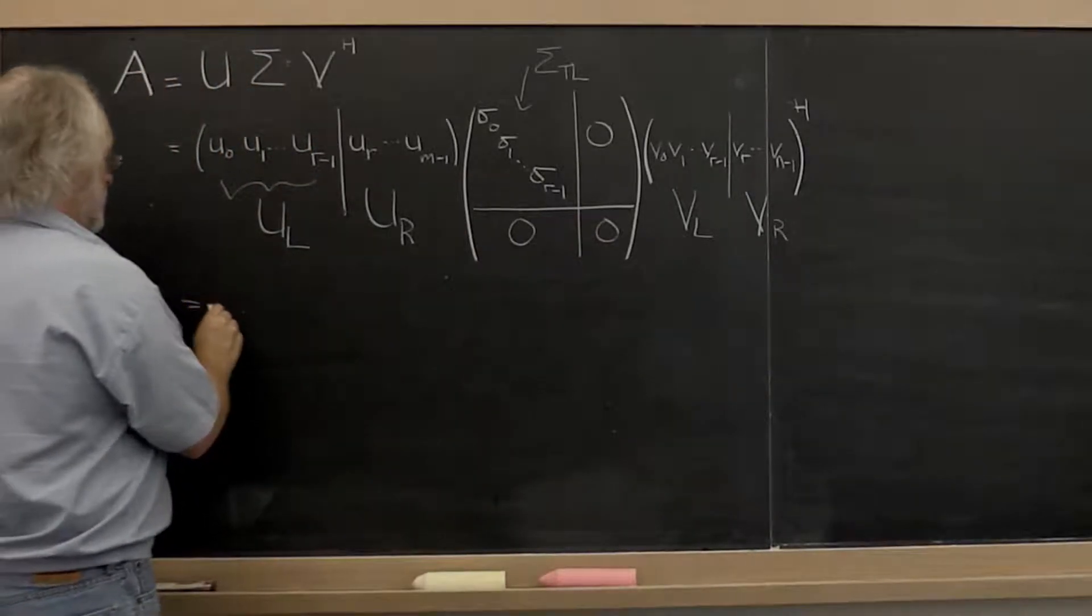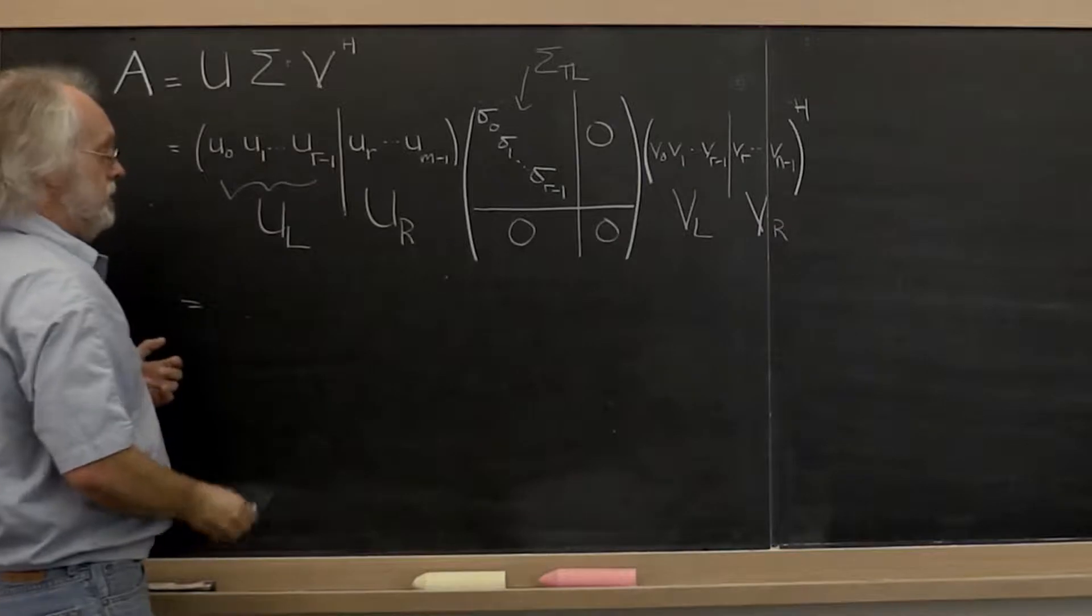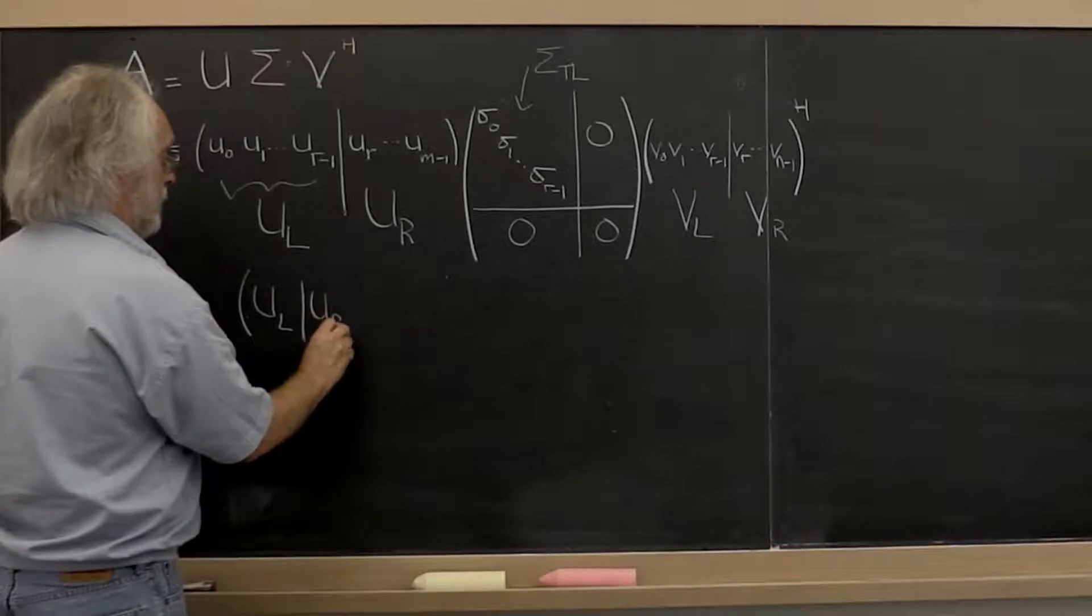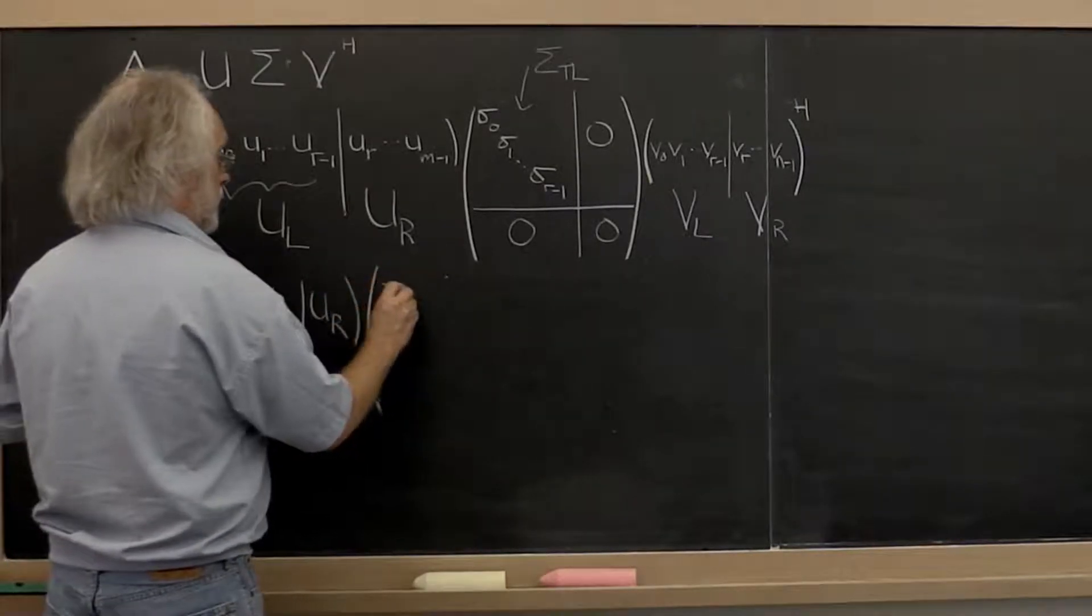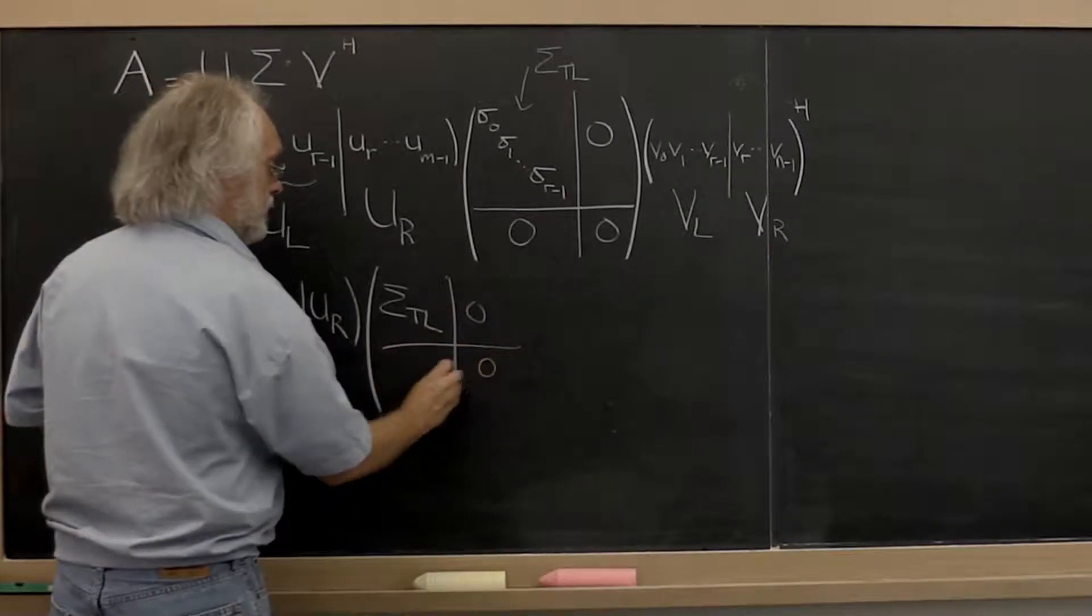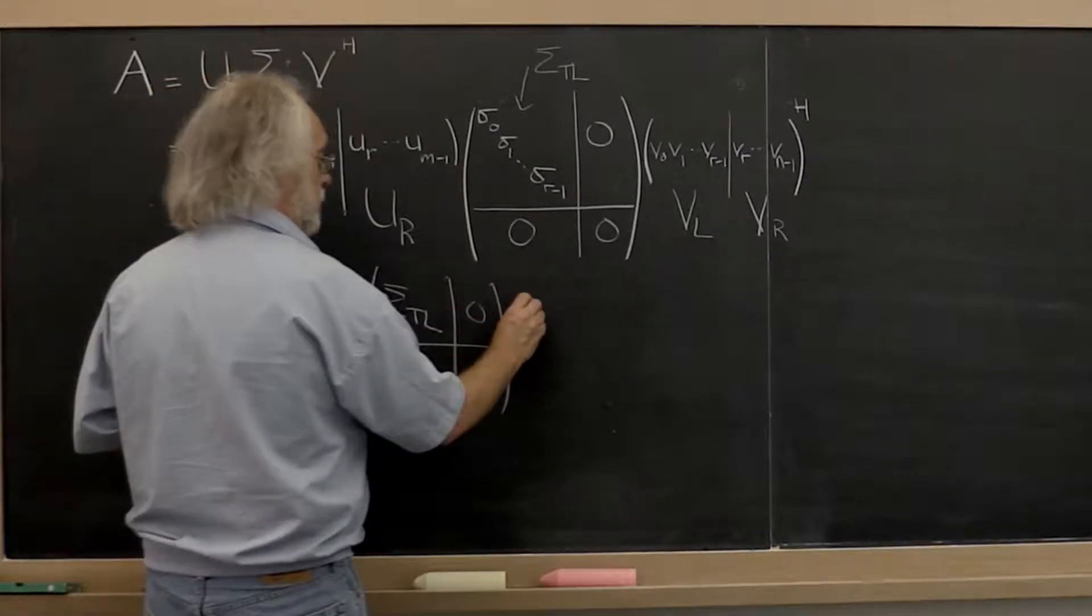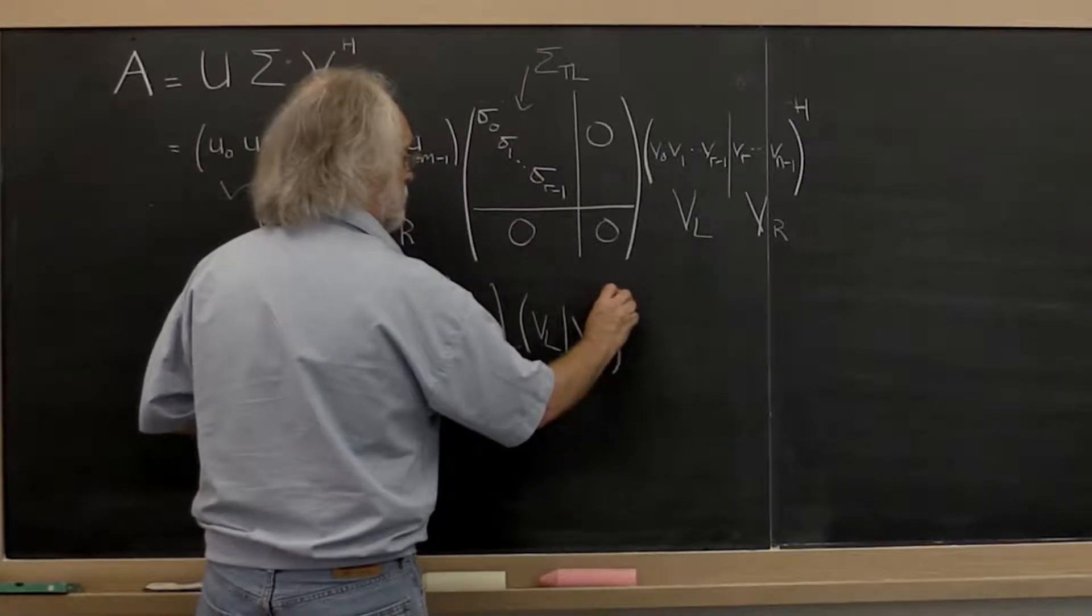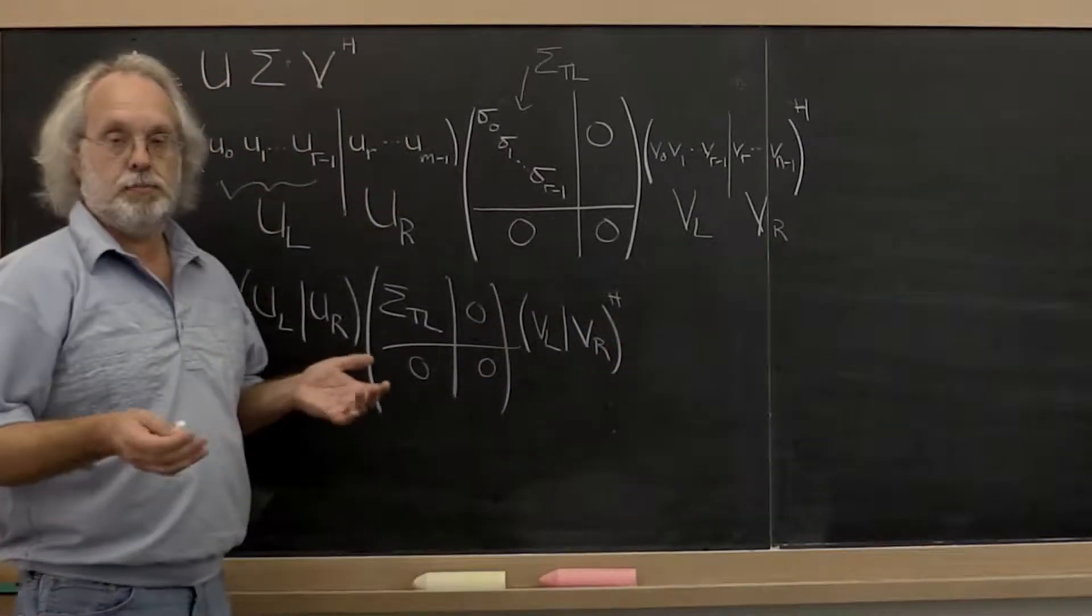So what that means is that we can view our singular value decomposition as U left U right times the matrix with the top left exposed and zeros for the rest, and then the matrix V left V right which must be transposed.